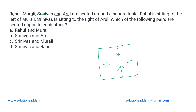It is given that Rahul is sitting to the left of Murali. Let us say Murali is sitting over here — this will be his right and left. Since Rahul is to the left of Murali, Rahul will be over here. And for Rahul, this will be right and this will be left.